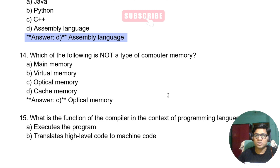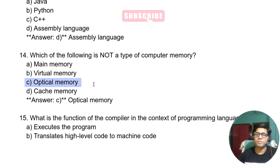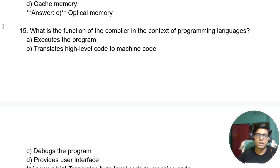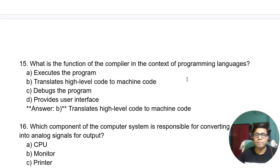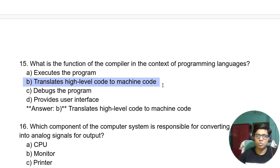Which of the following is not a type of computer memory? The answer is optical memory. Optical memory is not a standard type of computer memory. In the context of programming languages, what is the function of a compiler? It translates high-level language to machine language code.